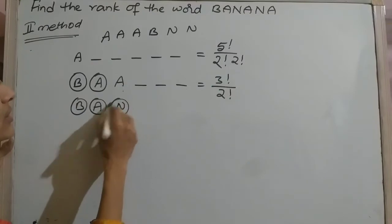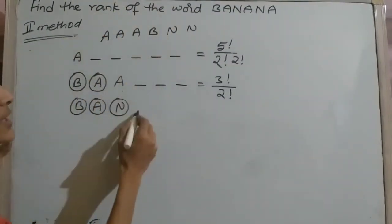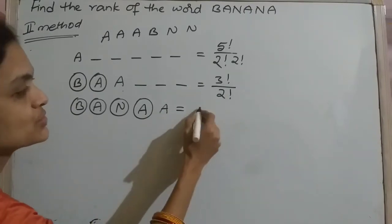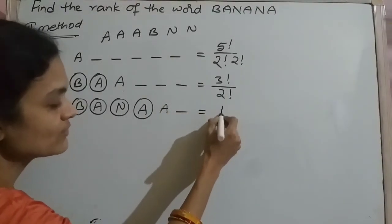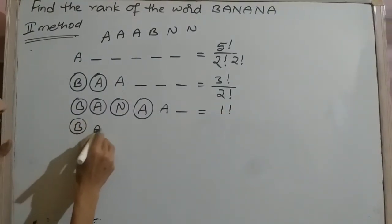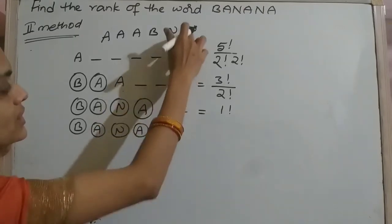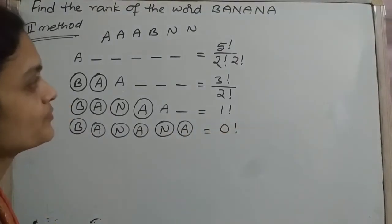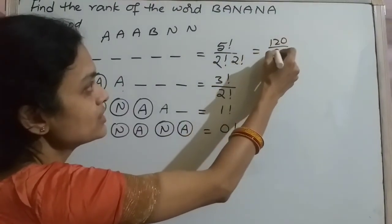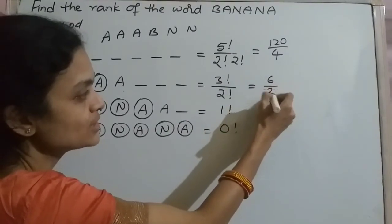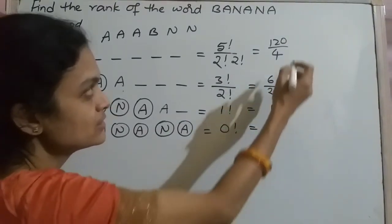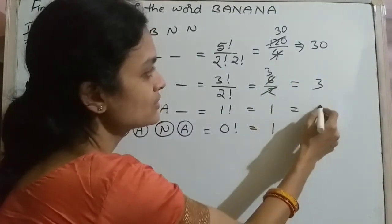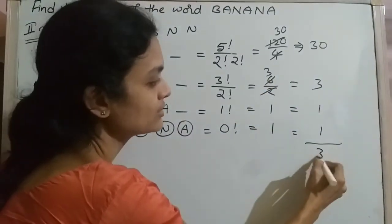Then go to N: N is fixed. Go to A — fixed. The next A is not fixed — one gap remains, so 1! ways. After B-A-N-A-A is completed, the next N is fixed. Then A is also fixed. Write 0!. So you get: 120/(2! × 2!) + 3!/2! + 1! + 0! = 30 + 3 + 1 + 1 = 35.